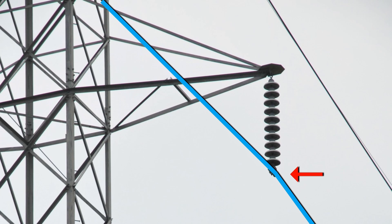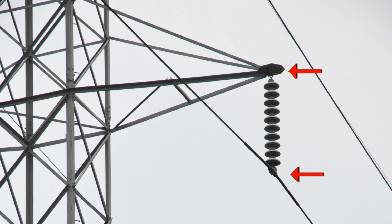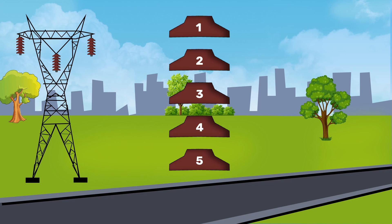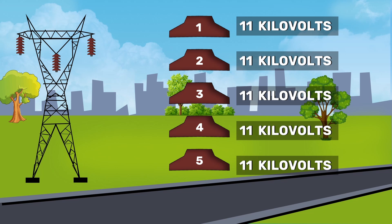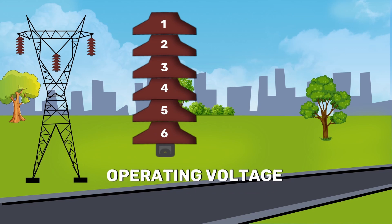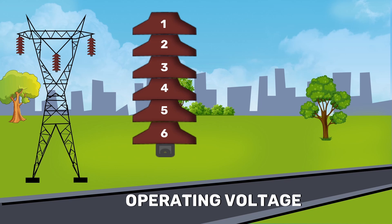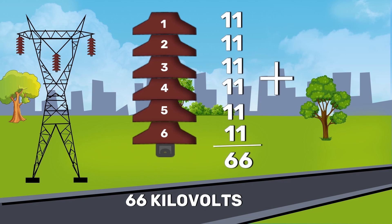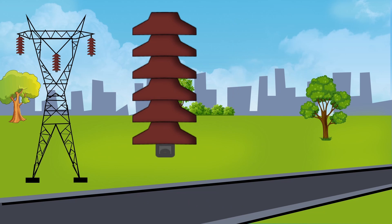The conductor is suspended at the bottom end of the string, while the other end of the string is secured to the cross arms of the tower. Each disc is designed for a voltage rating of 11 kV. The number of discs in a series depends on the operating voltage. For example, if the working voltage is 66 kV, then 6 discs in series will be provided on the string. If one disc is damaged, it can be replaced with a new one.